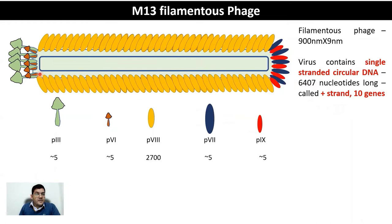M13 contains a single-stranded circular DNA represented in blue here, and this contains 10 genes. Importantly, all 10 genes are essential for the replication of M13 — there is nothing that you can remove from the genome, as we could do in Lambda phage vectors where it was easy to remove the genes of the lysogenic lifecycle, which also created space for additional insert size.